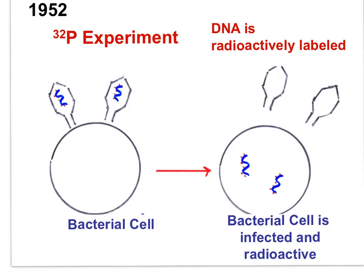In their second experiment, they radioactively labeled DNA using radioactive phosphorus, because DNA has phosphorus but protein does not. They allowed the radioactive viruses to infect bacteria, then blended the mixture to shake off the viral protein coats, and examined the mixture for radioactivity. With radioactively labeled phosphorus — the DNA — radioactivity was within the cells. DNA must be the hereditary molecule.